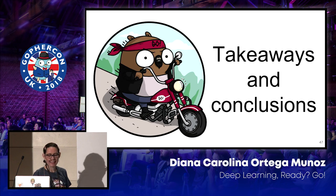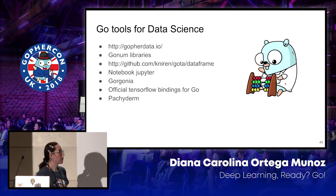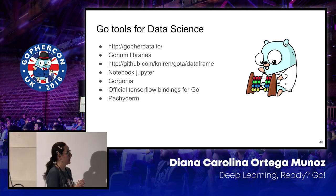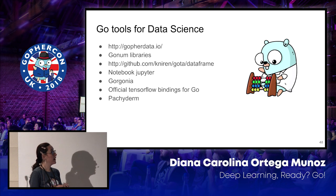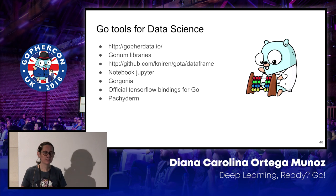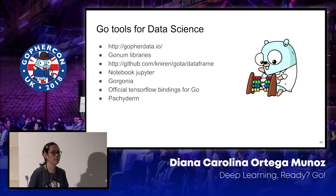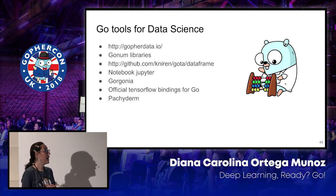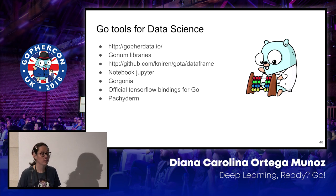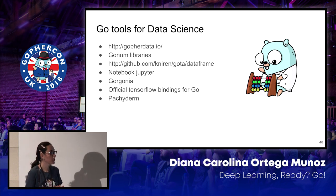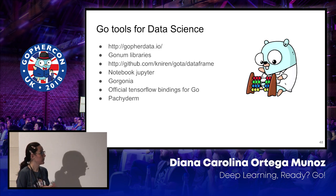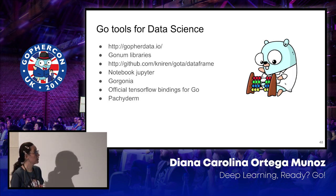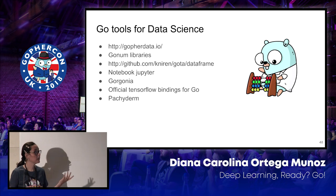There are a lot of good tools for data science in Go. If you want to know more, you can go to GoForData.io. There are a lot of resources and tools — links to cool stuff like machine learning packages, Pachyderm, developed algorithms. We have the GoNum libraries, the data frame, the Jupyter notebook, Gorgonia, Pachyderm — everything.